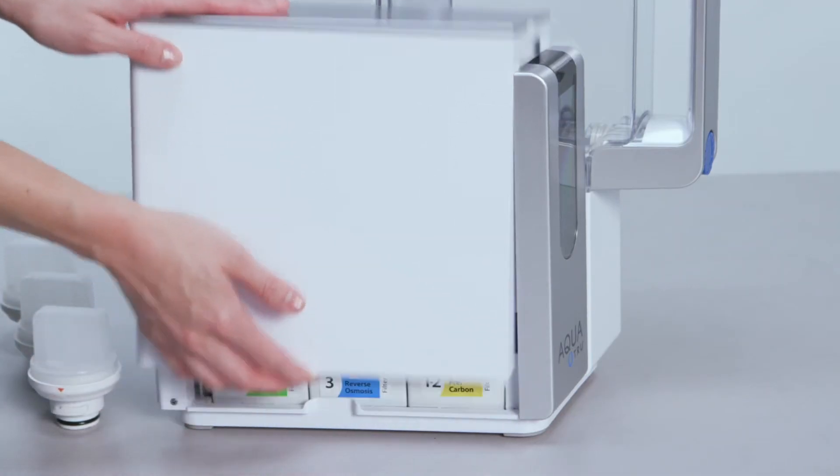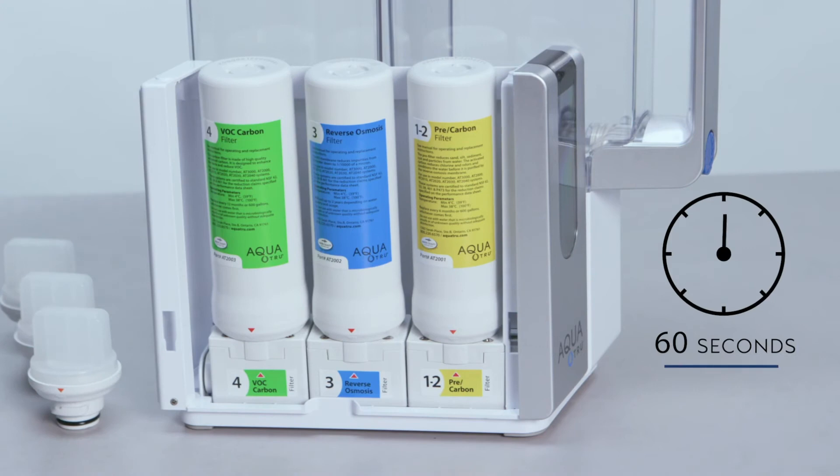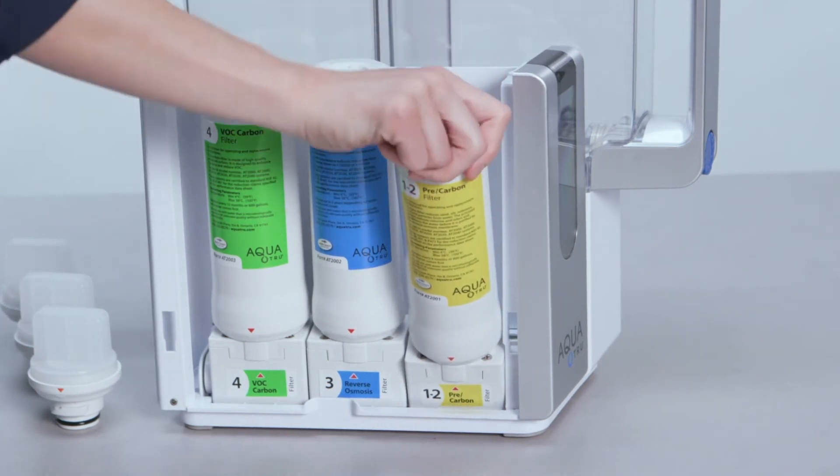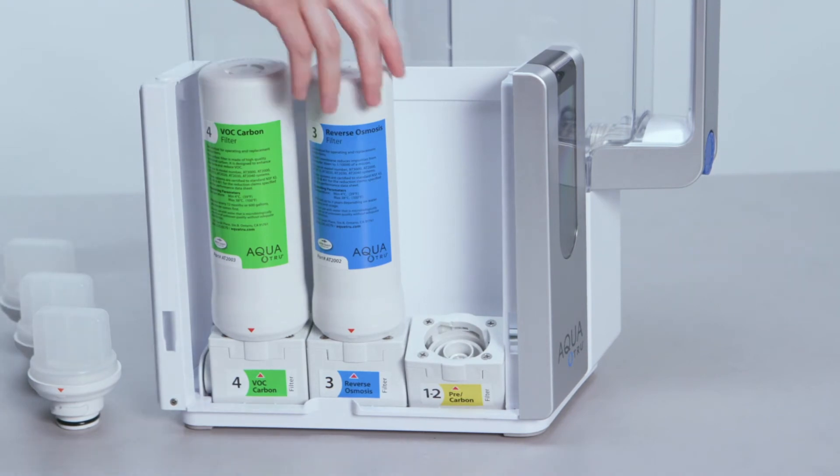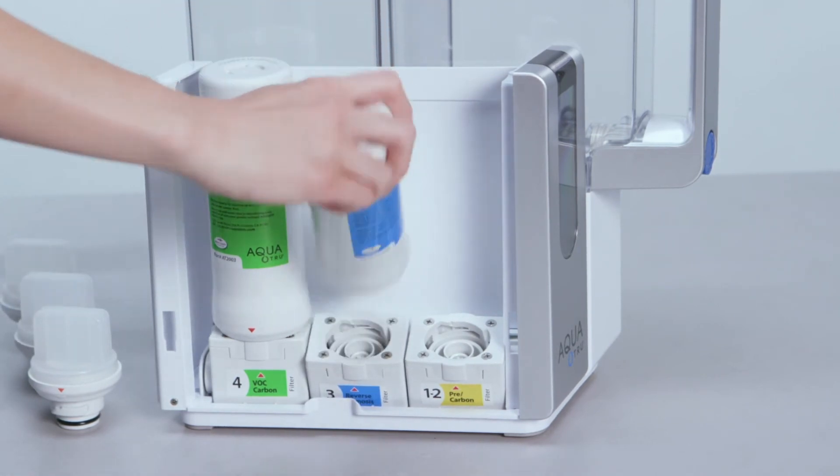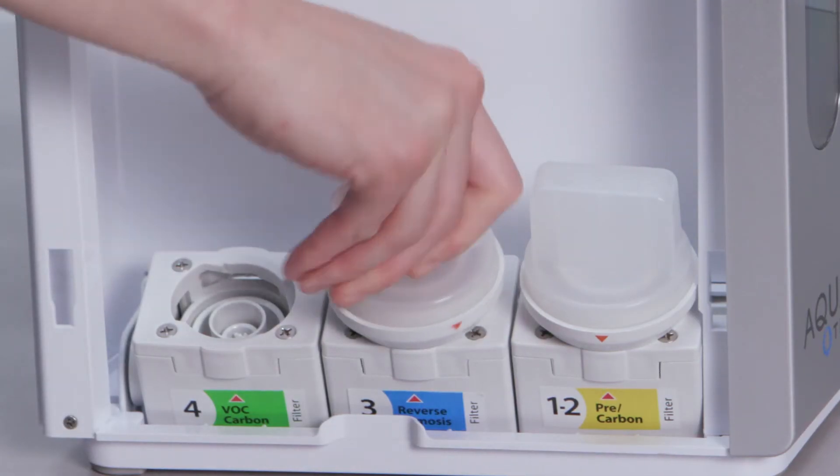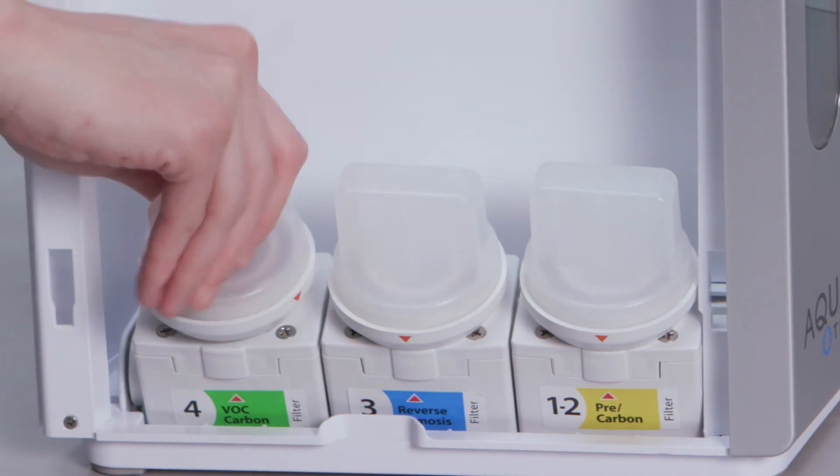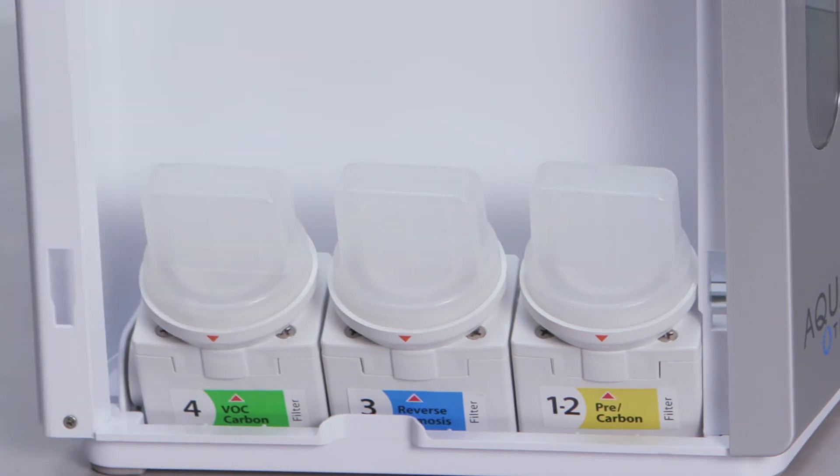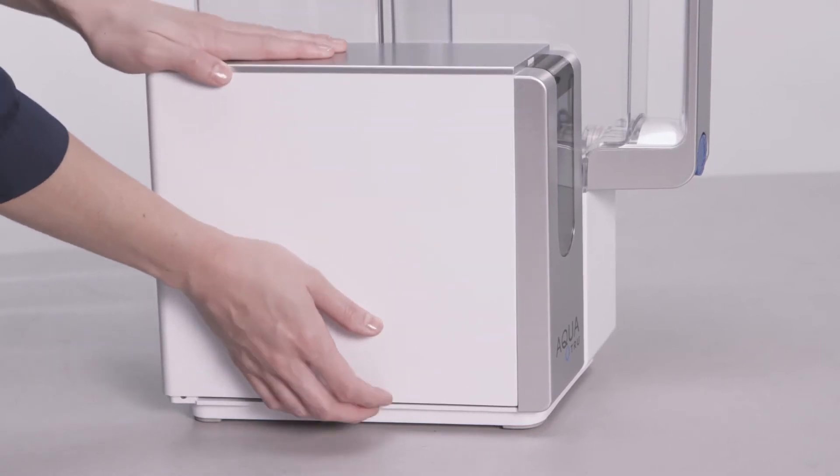Start by removing the filter cover. Wait 60 seconds for the filters to depressurize, then pivot the filter out and remove each filter by turning counter-clockwise. Install the AquaTrue descaling filters by twisting them in clockwise so the red arrows align. Slide the cover back on.